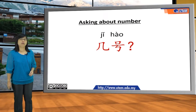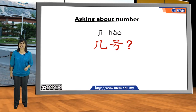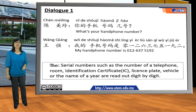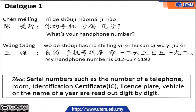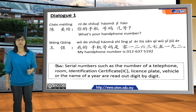Now we move forward to conversations about numbers. When asking about a number, the key phrase is 几号, which means 'what's the number?' Let's see a conversation between 陈美琳 and 王强. 陈美琳 wants to know 王强's handphone number. She asks: 你的手机号码几号? — What's your handphone number? 手机 is handphone, 号码 is number. And 王强 replies: 我的手机号码是零一二六三七五一九二. My handphone number is 012-637-5192.